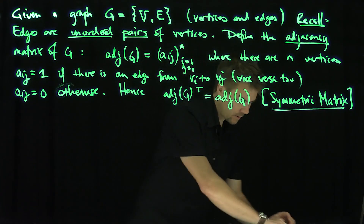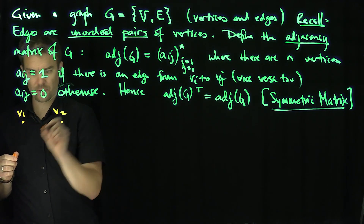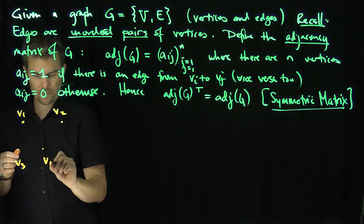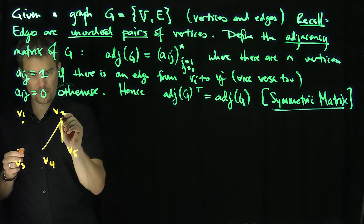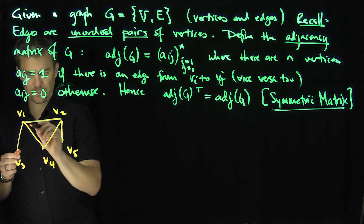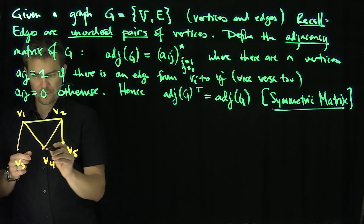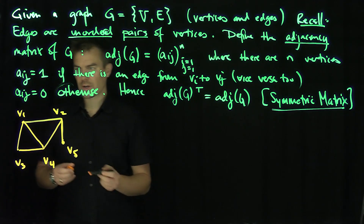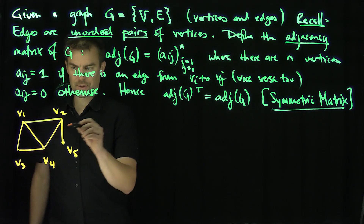Here's our example. Let's draw vertices V1, V2, V3, V4, and V5. V1 connects to V2, V3, and V4. V5 is hanging off to the side. V4 connects over here. So that's my graph G with vertices V1, V2, V3, V4, and V5. What is the adjacency matrix of this graph?